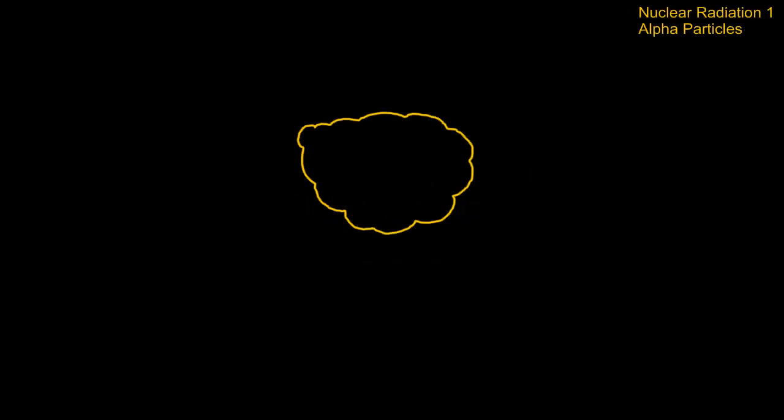Today we're going to take a look at a type of nuclear radiation — specifically the biggest particle given off. There are three main sorts of radiation: alpha particles, beta particles, and gamma rays.